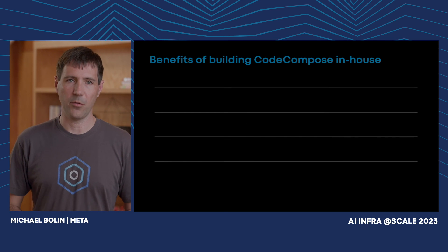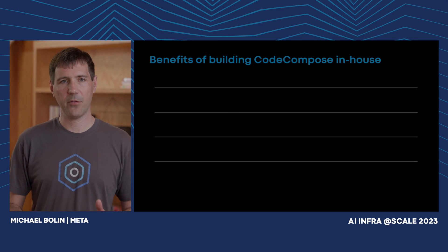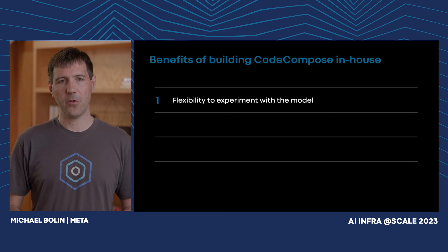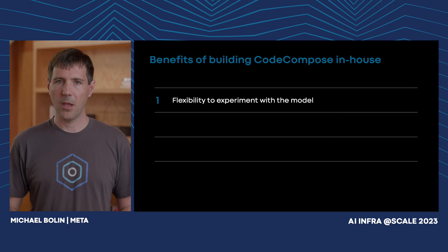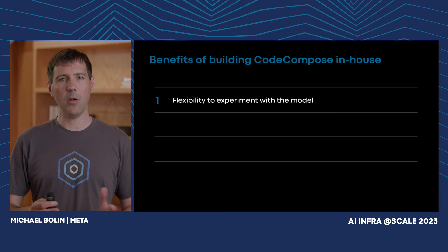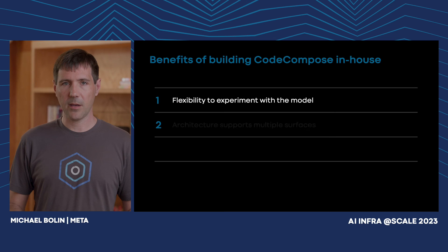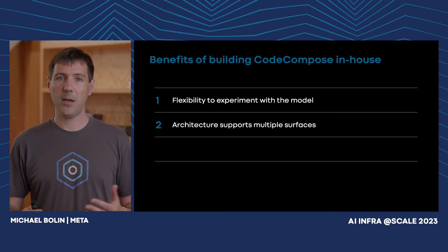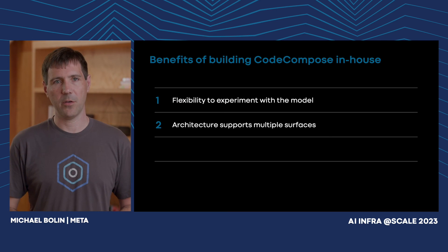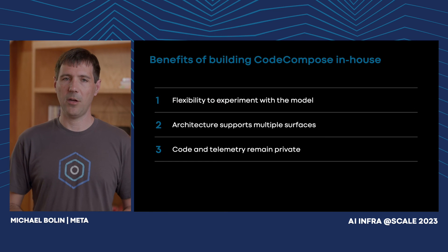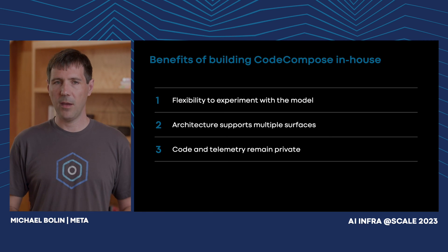We are extremely excited with our progress on Code Compose to date, and we believe that our developers are best served by bringing this work in-house. First, having the flexibility to experiment with the model has made it possible to support languages like Hack and Flow, avoid undesirable code patterns, and perform all sorts of analyses and explorations to improve the service that would not have been possible if the model were a black box. Second, because we control the product from end to end, we can integrate Code Compose anywhere in any of our vast array of internal tools, and our LSP architecture makes it economical to do so. Third, privacy and security are fundamental to all the work we do here at Meta. Building Code Compose in-house ensures we do not share our code with third parties, and that the telemetry we collect is subject to access controls.